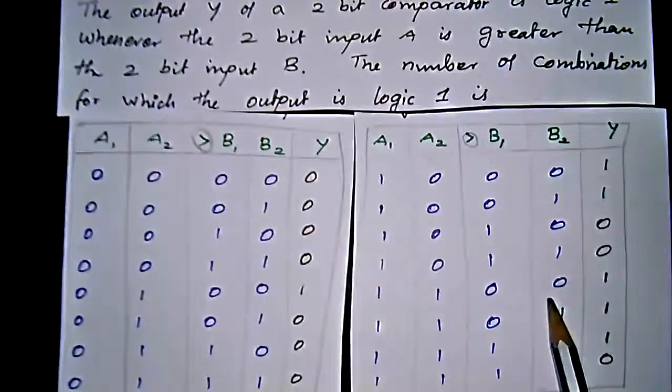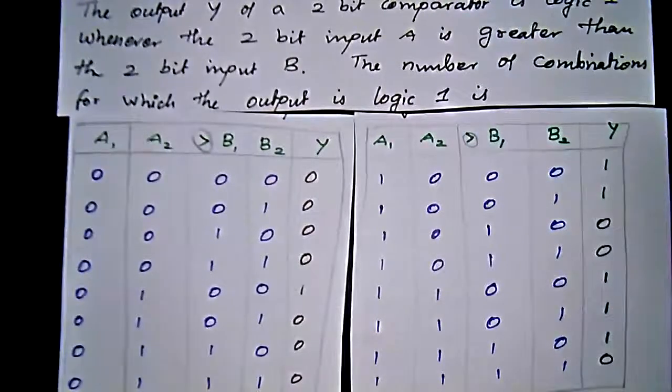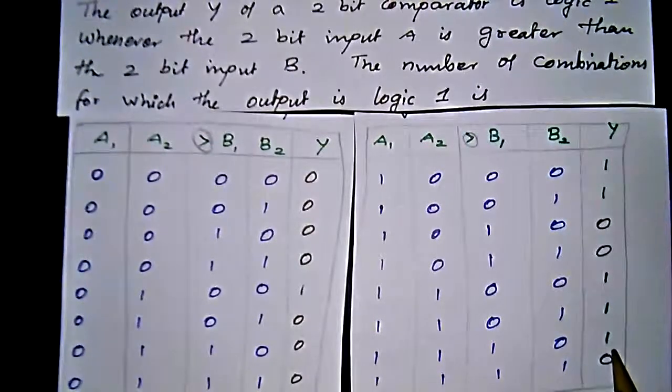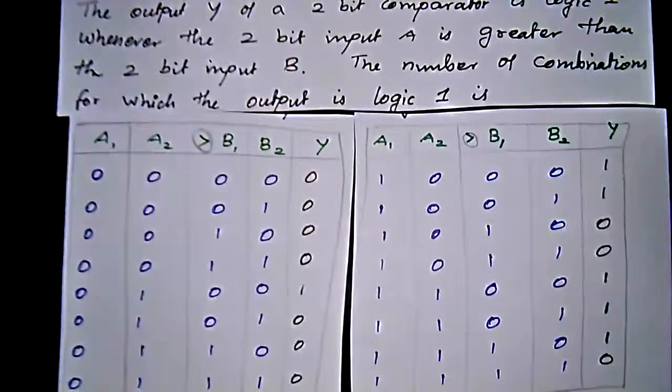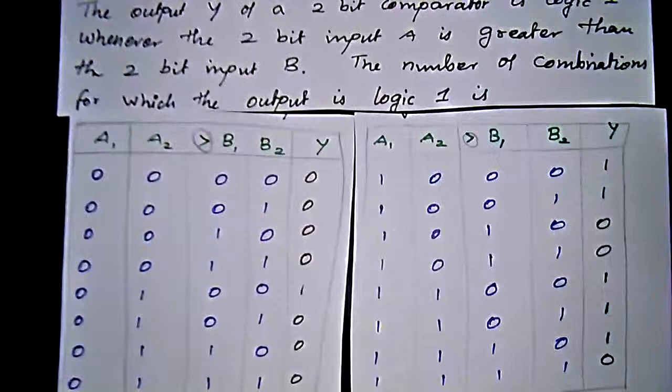For 1, 1, 0, 0 we get 1. For 1, 1, 0, 1 we get 1. For 1, 1, 1, 0 we get 1. And 1, 1, 1, 1 means A equals B, so output is 0.